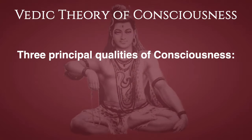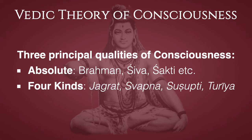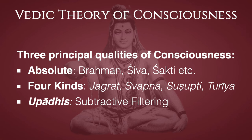In this video series, we're going to talk about three principal qualities of consciousness. First, the fact that it's absolute — sometimes called Brahman, Shiva, Shakti, and many other names for the absolute or the supreme. Second, there are four kinds of consciousness: Jagrat, Svapna, Sushupti, and Turiya. Third, consciousness is caused by upadis — subtractive filtering of the absolute, Brahman, or infinite consciousness.